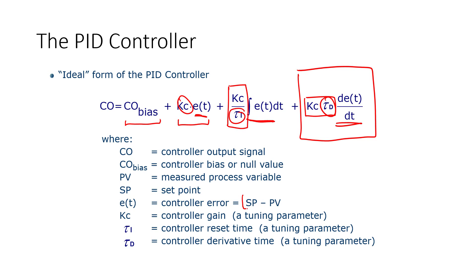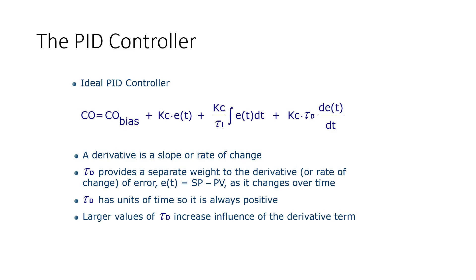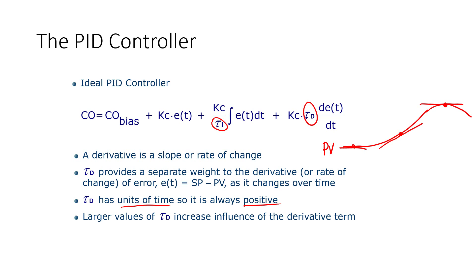The error is always defined as set point minus process variable — the target value minus the measured value. The derivative term represents the slope or rate of change. If you take any point on the PV and draw a tangent, that's the slope at that point. The slope is zero at the peaks and troughs but rises to a higher value in between. Tau_d has units of time, so it's always positive, as is tau_i. Kc can be positive or negative.